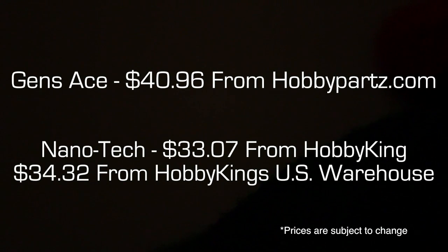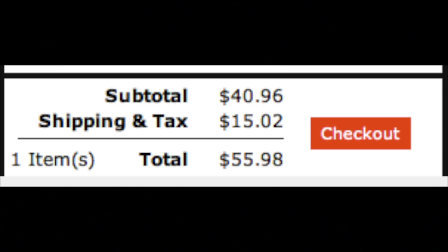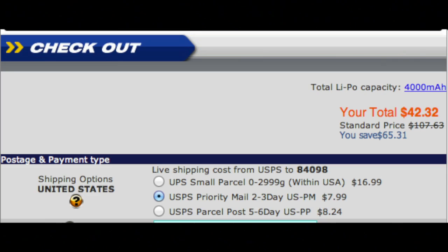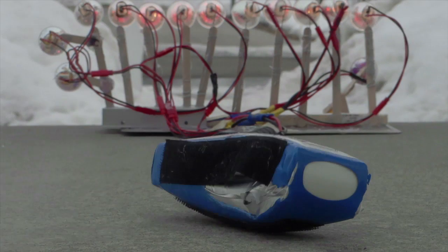When we're looking at prices the Gens Ace is $40.96 at hobbyparts.com and the Nanotech is $33.07 from HobbyKing and $34.32 from HobbyKing's US warehouse. If you were just to purchase this one battery alone from each store it would be $55.98 from hobbyparts.com with shipping included and from HobbyKing it would be $42.32 with shipping included. So the Turnigy definitely wins in price.